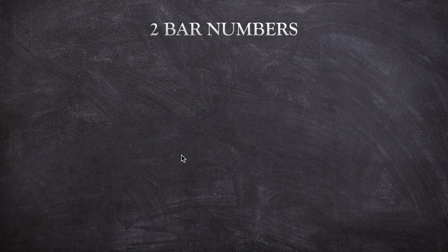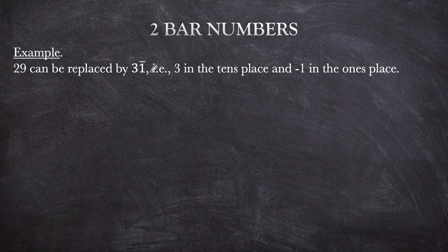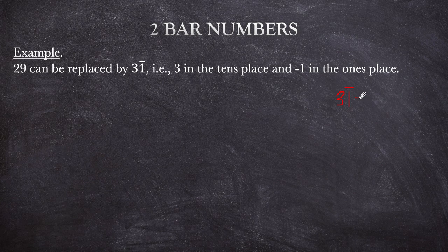For example, 29 can be replaced and written as 3 bar 1. That is 3 in the tens place and minus 1 in the ones place. So 29 equals 3 bar 1 because 3 is in the tens place, meaning it equals 30 minus 1, which gives us 29. We subtract 1 because that's what bar 1 means — minus 1 from 30.